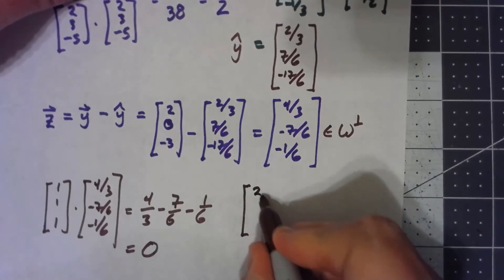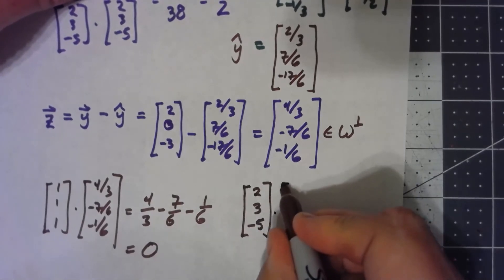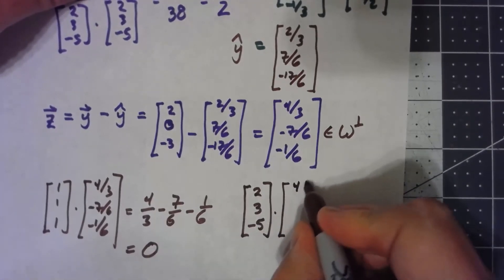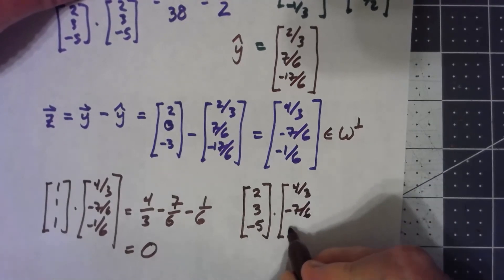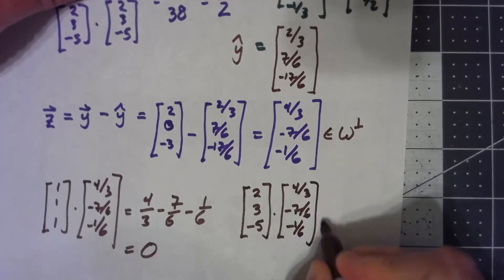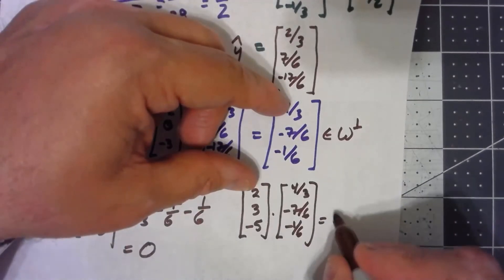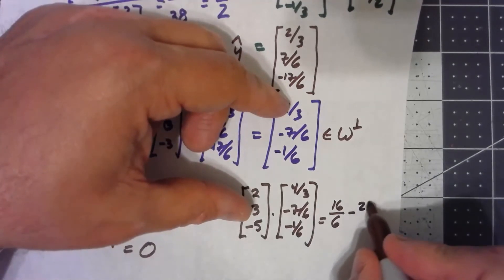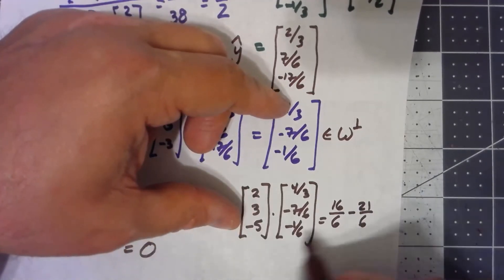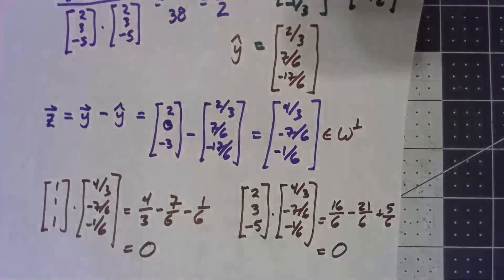My other basis element was (2, 3, -5). If I dot that with the (4/3, -7/6, -1/6), a little tougher, I get 8/3 or 16/6. Minus 21/6 plus 5/6, again, gives me zero.